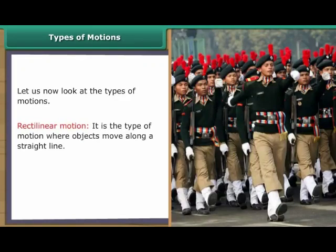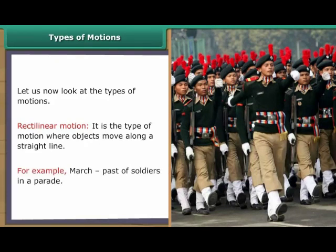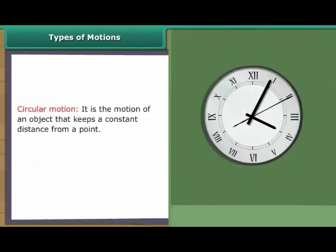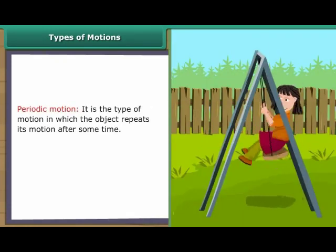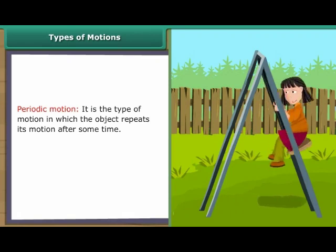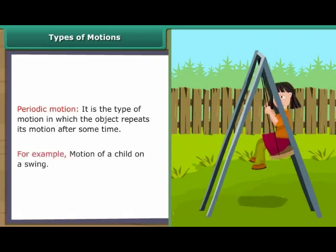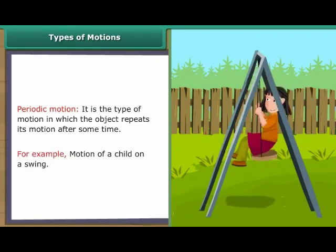Rectilinear Motion is the type of motion in which objects move along a straight line. Circular motion is the motion of an object that keeps a constant distance from a point, for example, hands of a clock. Periodic Motion is the type of motion in which the object repeats its motion after some time, for example, motion of a child on a swing.